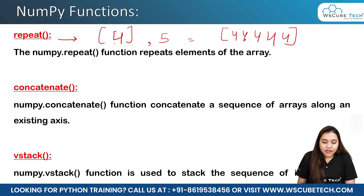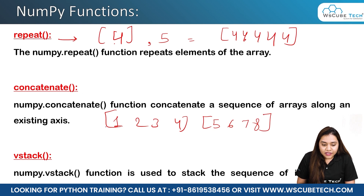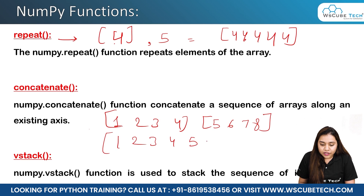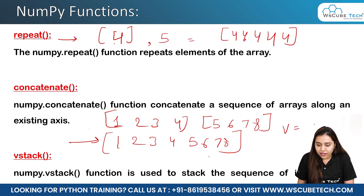Next is concatenate. Concatenate means if you have two arrays, say one, two, three, four and another array five, six, seven, eight, the concatenate method will join these two arrays along an axis, giving output one, two, three, four, five, six, seven, eight — a new joined array. There are two axes: the vertical axis is zero and the horizontal axis is one.